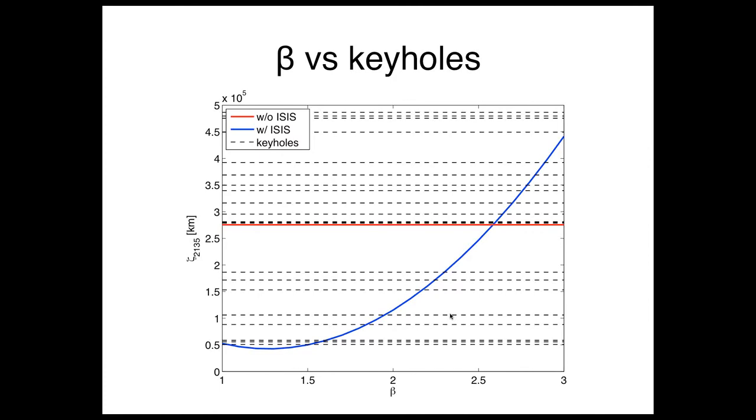If we look at this simple direct hit example, now we're looking at zeta 2135 on the left and the different values of beta. This is where we are now with no deflection in zeta, and these are all the keyholes plotted as dashed lines. If beta is small between 1 and 2, it is fairly insensitive. The deflection is going to be from here down to here. And as beta increases, you get much more effect from that ejecta.